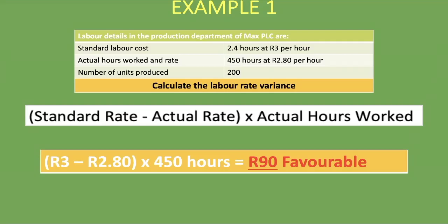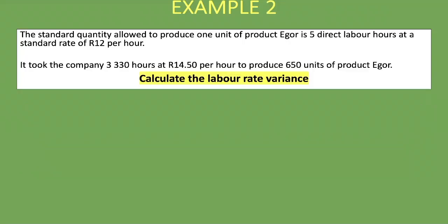Here is our second example. Pause the video and attempt it yourself before comparing your answer. We're told that the standard quantity to produce one unit of product Ego is 5 direct labor hours at a standard rate of 12 rand per hour. The company took 3,330 hours at 14 rand 50 per hour to produce 650 units.